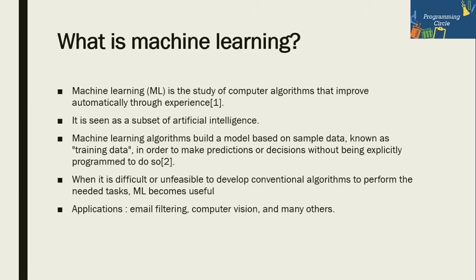Why is machine learning important? Because when conventional algorithms are not able to perform, we bring in ML algorithms and they become useful. Major applications include email and spam filtering, computer vision — especially segmentation of heart images — classification, and in social media, link predictions and other tasks where machine learning is immensely used.